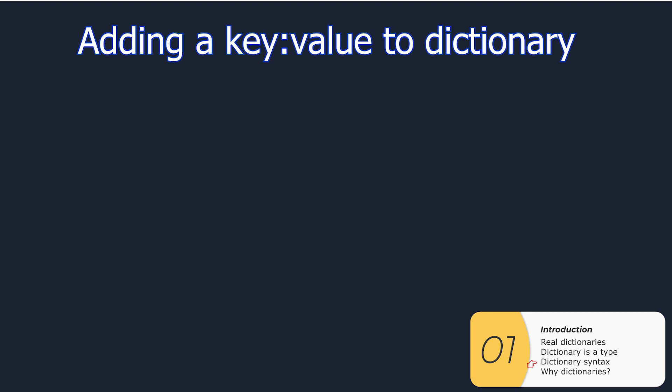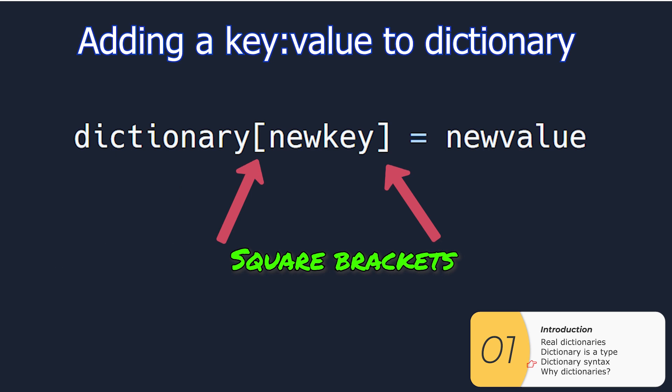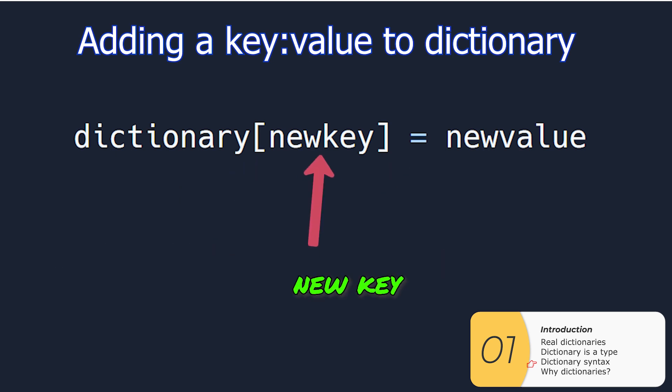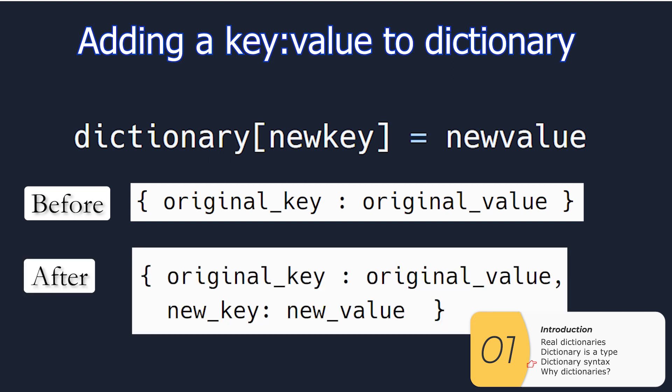Moving on to adding items into the dictionary — if I want to add something, the syntax is dictionary bracket, the new key, equals the new value. If my dictionary looks like this before with one original key and one original value, it'll look like this afterwards with the original key-value still there, plus a new key and a new value.